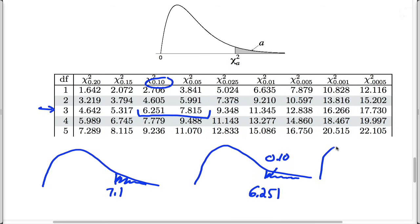Now the area to the right of 7.815, this area here is given in the table as 0.05.